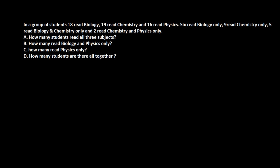We're going to solve a similar question to the last one. In a group of students, 18 read biology, 19 read chemistry, and 16 read physics. 6 read biology only, 9 read chemistry only, 5 read biology and chemistry only, and 2 read chemistry and physics only. We need to answer four questions: how many students read all three subjects, how many read biology and physics only, how many read physics only, and how many students are there altogether.